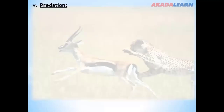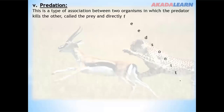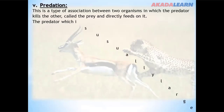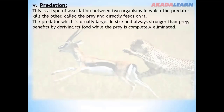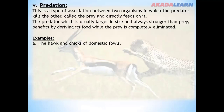Predation is a type of association between two organisms in which the predator kills the other, called the prey, and directly feeds on it. The predator, which is usually larger in size and stronger than the prey, benefits by deriving its food, while the prey is completely eliminated. Examples: the hawk and chicks of domestic fowls; and the lion and goats.